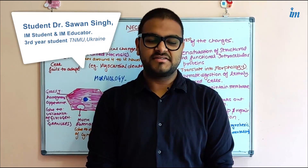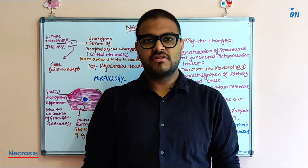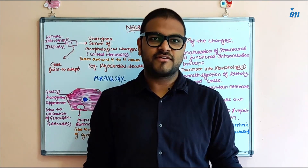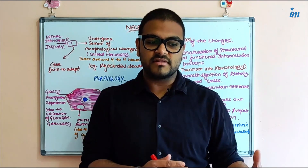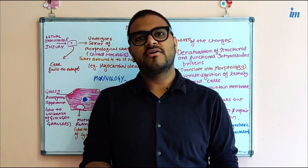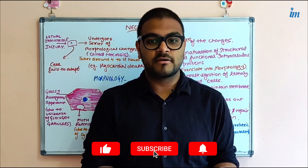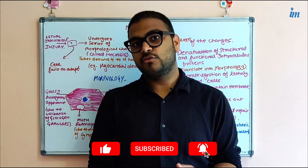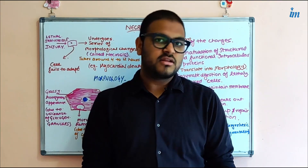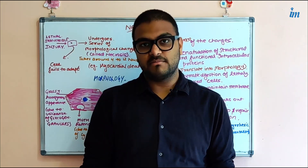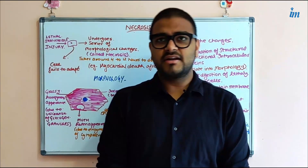Hello everybody, I am Savan from Inspiring Minds, an educator. Today we will discuss necrosis. First, let me tell you why we should study it and what's the significance. Necrosis is a form of cell death, and once the cells are necrosed they are of no use — they are dead. For example, myocardium necrosis after ischemia means the myocardium is dead, which can result in the death of a person. If you have gangrene, a type of necrosis in your limbs, the only thing that can be done is to cut off that limb because the cells of that area are necrosed and dead.